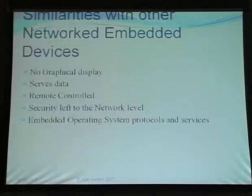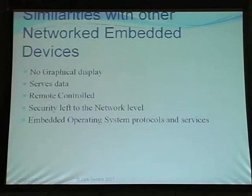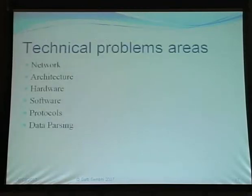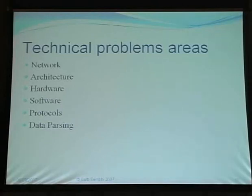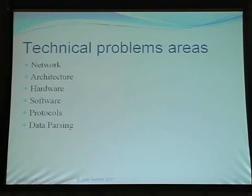The similarities between CCTV cameras and other network embedded devices are clear: no graphical display, serves data, is remote controlled, security is left to the network level, and there's an embedded operating system running appropriate protocols and services. Technical problem areas span the network, architecture, hardware, software, protocols, and data passing — with no one technically competent looking at any of them.